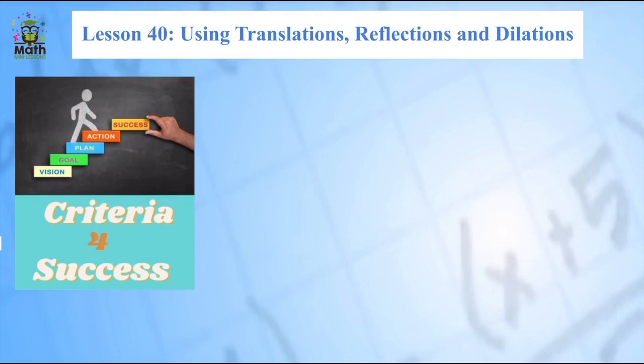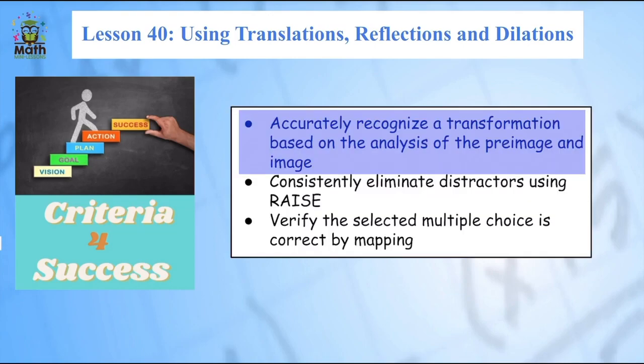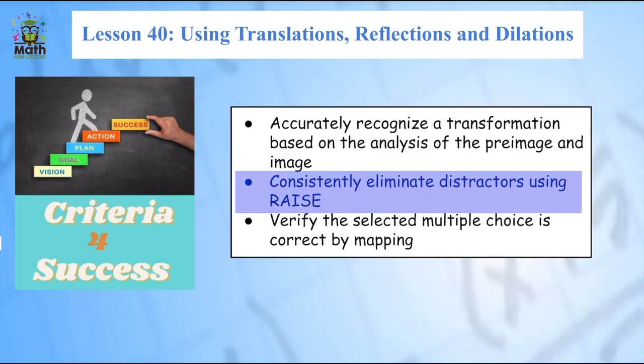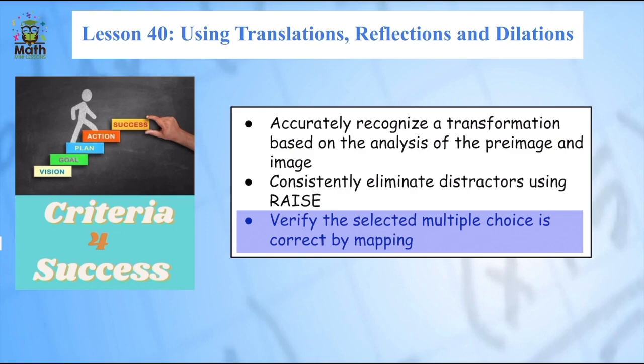This is lesson 40 and in this lesson we're going to use three transformations: translations, reflections, and dilations. Watch how I can accurately recognize a transformation based on the analysis of my pre-image and my image, how I consistently eliminate any distractors in a multiple choice problem using RAISE.